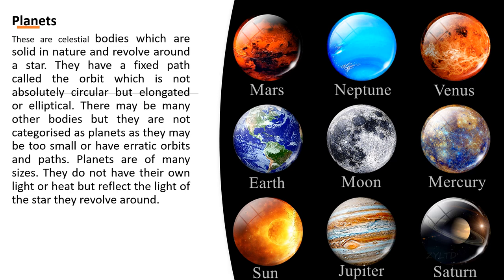We call a body a planet only if it has a preferable size and a fixed orbit around the sun. Pluto, for example, is no longer categorized as a planet because it is too small and does not follow a proper orbit. Planets are of many sizes and do not have their own light and heat — they reflect the light of the star they revolve around.